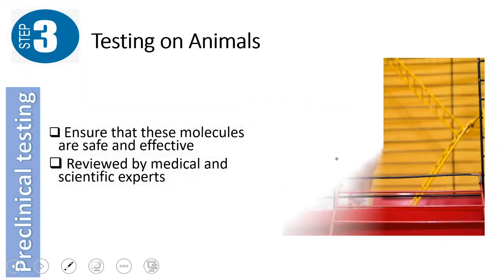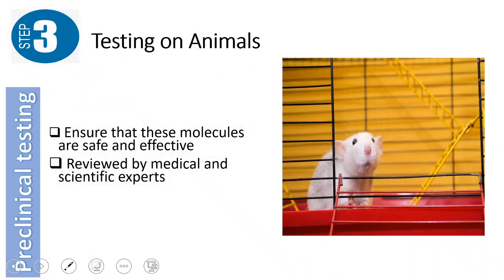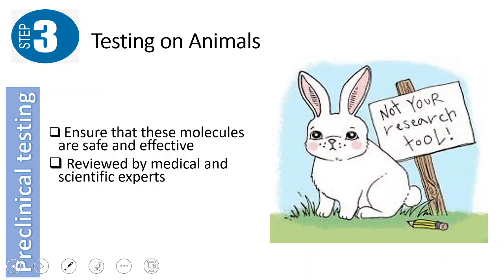The third step is testing on animals. Animals are used because they have similar morphology and anatomy to humans, and we cannot test on humans at this stage. This is to ensure that these molecules are safe and effective. Animals do raise ethical issues, but it is better than working on humans at this stage. The evidence from these testings is reviewed by medical and scientific experts, and if approved, it will move on to human testing — the clinical trials.